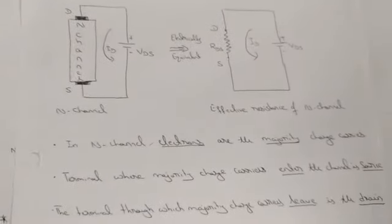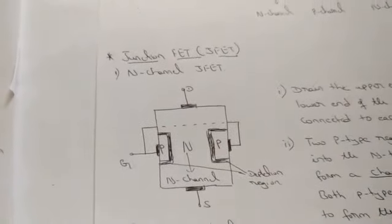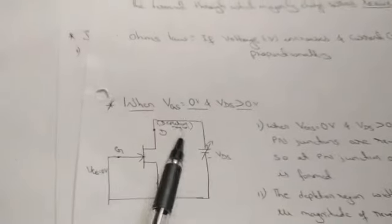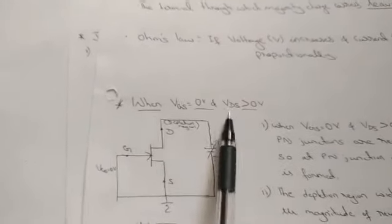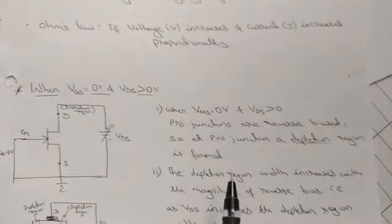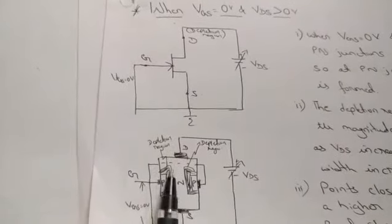We will consider two cases for JFET operation. Case one: VGS is kept constant (grounded) and VDS is variable. Case two: both VGS and VDS are variable. For the first condition, when VGS equals zero and VDS is greater than zero, the PN junctions are reverse biased, forming a depletion region. The diffusion region expands, and the channel narrows at the drain.